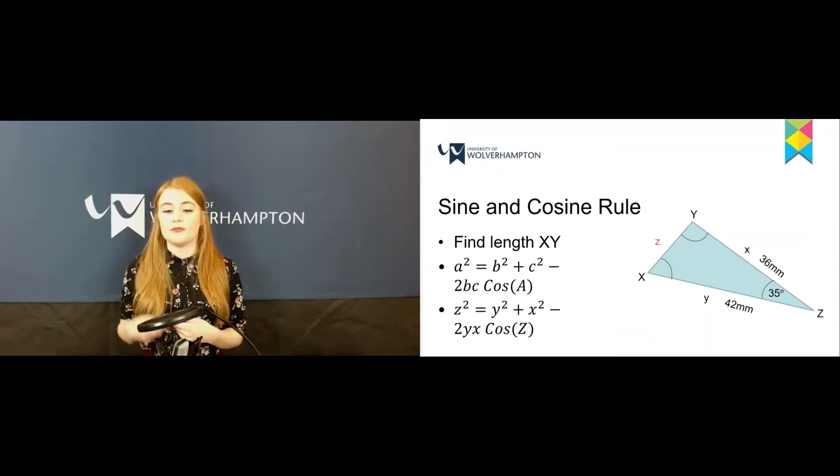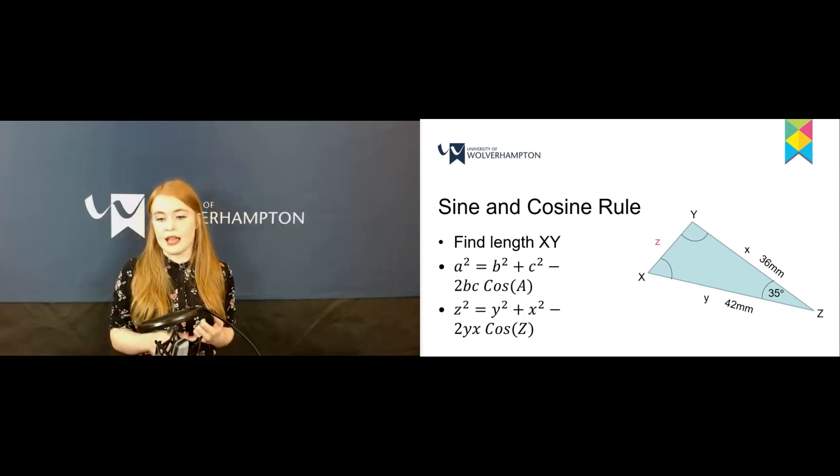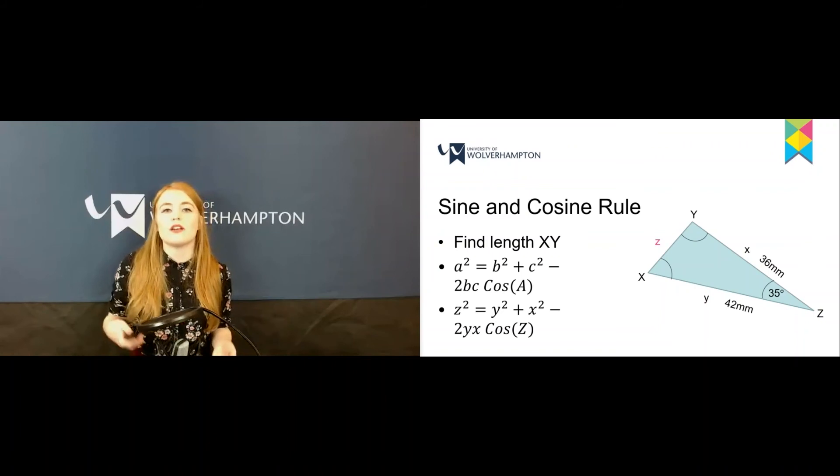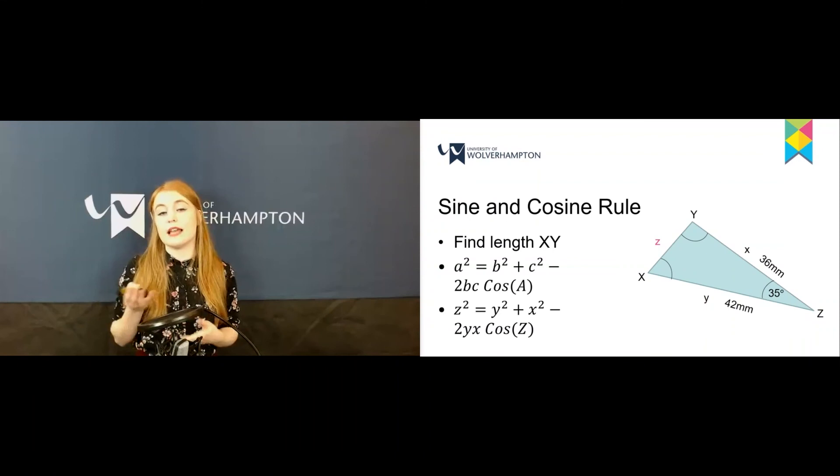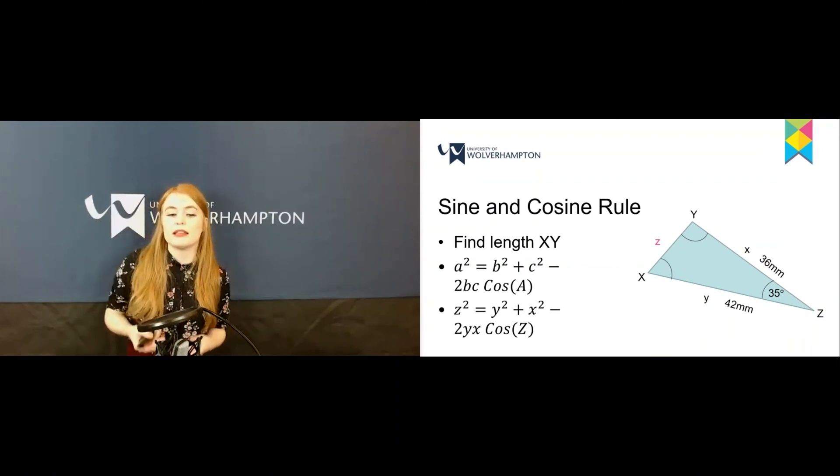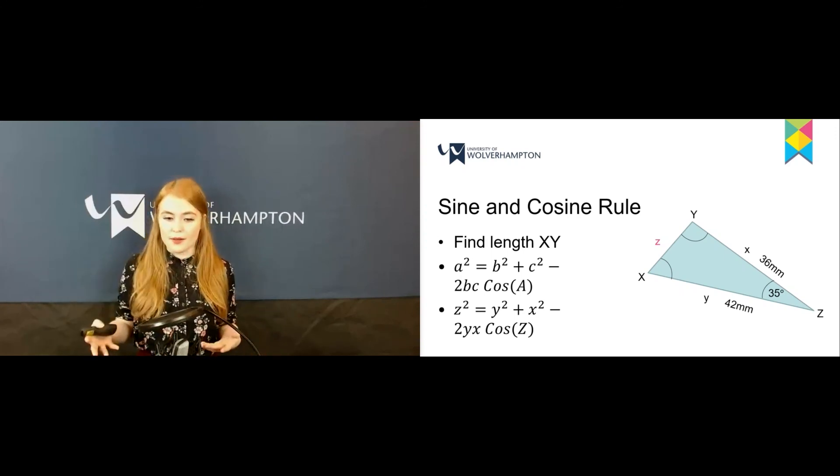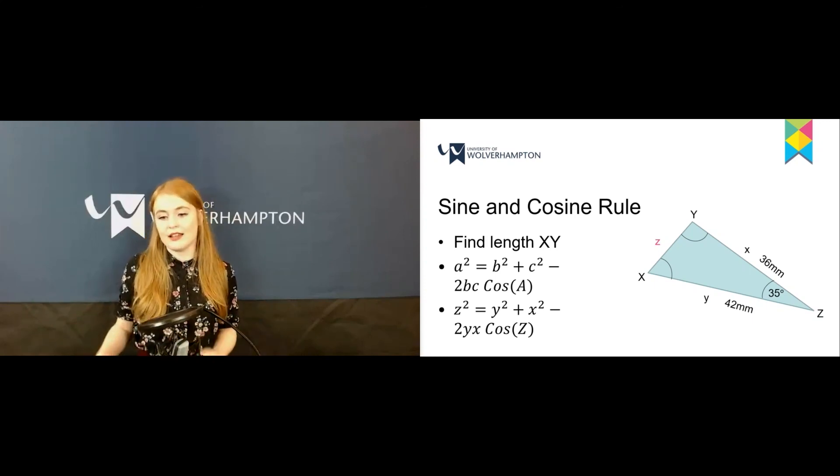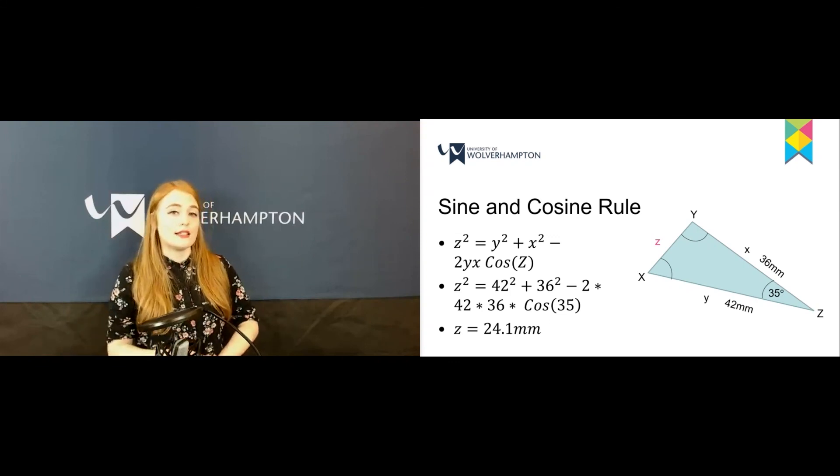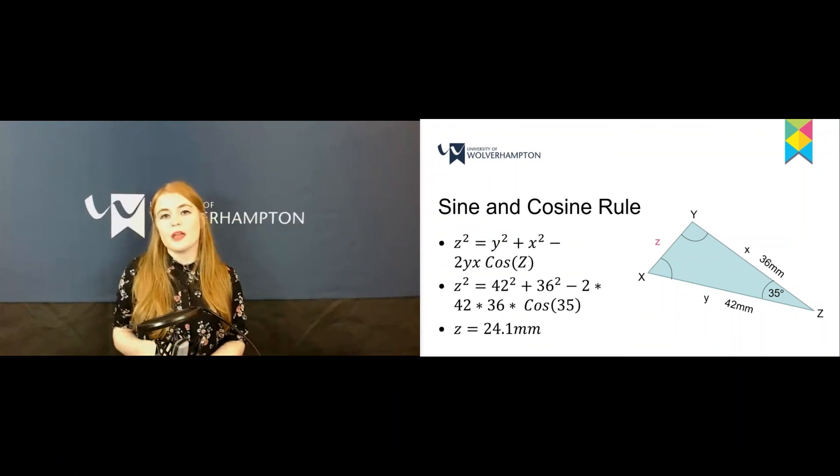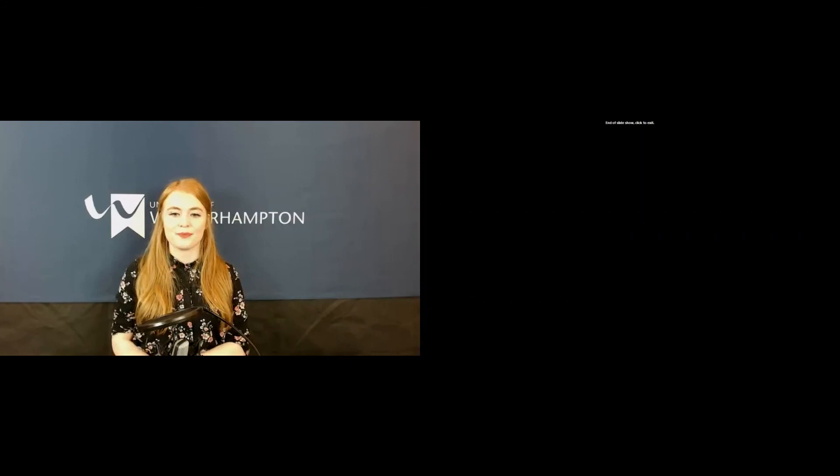Take this example. If we wanted to find the length XY, we have the two sides x and y and the angle z. We can use our formula but need to adapt it because we're given x, y, and z, not a, b, and c. We want to find z, so we make that the subject. Now z² = y² + x² - 2xy·cos(Z). We know y is 42, x is 36, and the angle is 35. When we pop that into the formula, we get 24.1 millimeters.